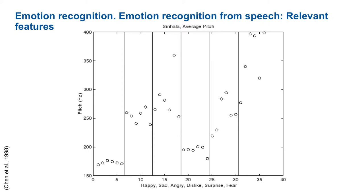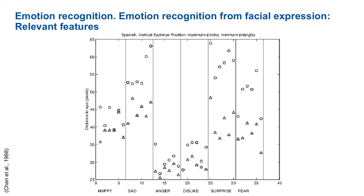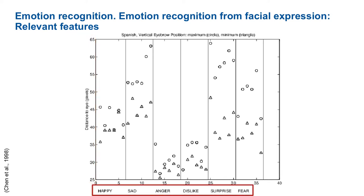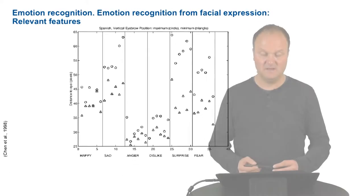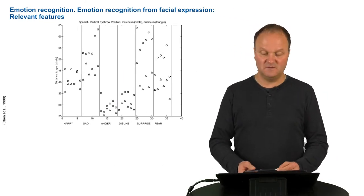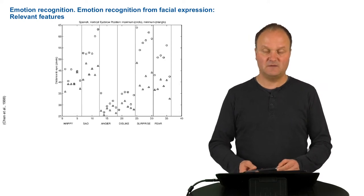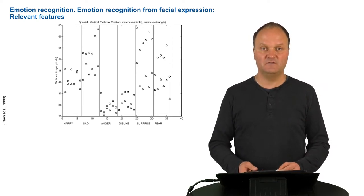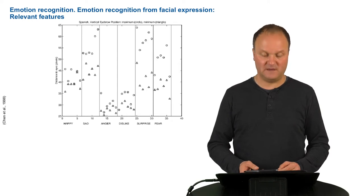You can take other information, for example visual information, as we see here. Here we have the distance to the eyes and the six basic emotions. Some of them can be differentiated on the basis of this parameter and some others cannot. So apparently it is good to combine audio and visual information, and it seems that audio and visual information is not equally relevant for all types of emotions.